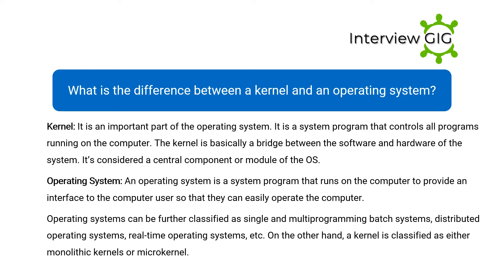An operating system is a system program that runs on the computer to provide an interface to the computer user so that they can easily operate the computer. Operating systems can be further classified as single/multi-programming, batch systems, distributed operating systems, real-time operating systems, etc. A kernel, on the other hand, is classified as either monolithic kernels or microkernel.